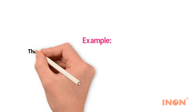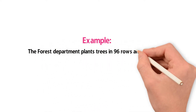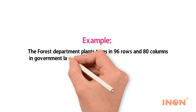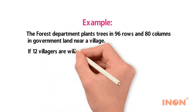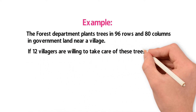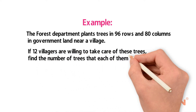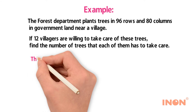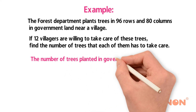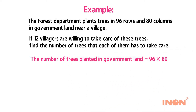Example: The forest department plants trees in 96 rows and 80 columns in government land near a village. If 12 villagers are willing to take care of these trees, find the number of trees each of them has to take care of. The number of trees planted equals 96 into 80, which equals 7,680 trees.